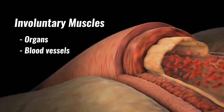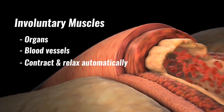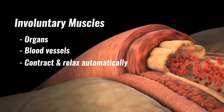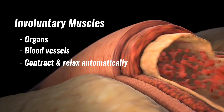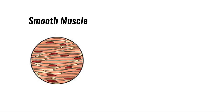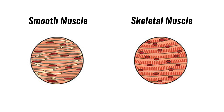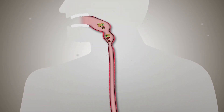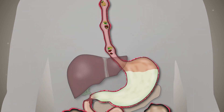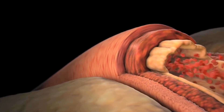Involuntary muscles are found around organs and in blood vessels. We do not consciously have the ability to control this type of muscle — they contract and relax automatically. Involuntary muscles are also known as smooth muscle because they do not have the striped appearance that skeletal muscles have. Smooth muscle is found in the walls of hollow organs such as the stomach, esophagus, bronchi, and in the walls of blood vessels. Involuntary muscles help move food along the esophagus or constrict blood vessels to reduce blood flow.